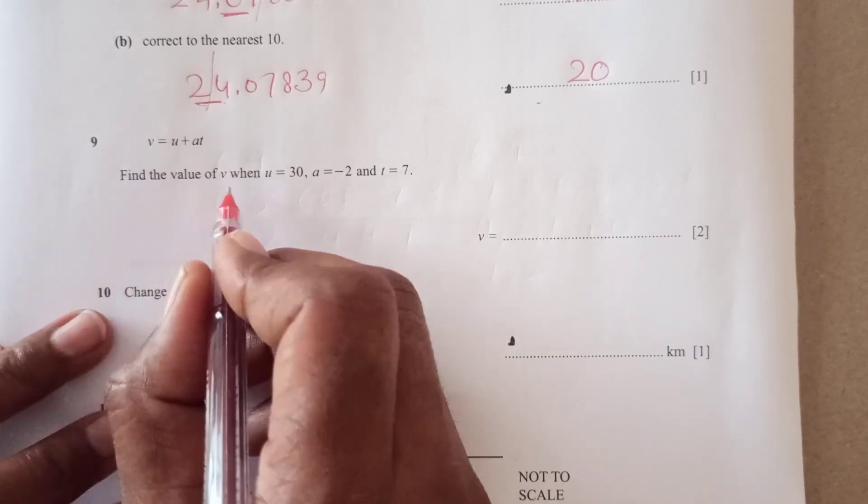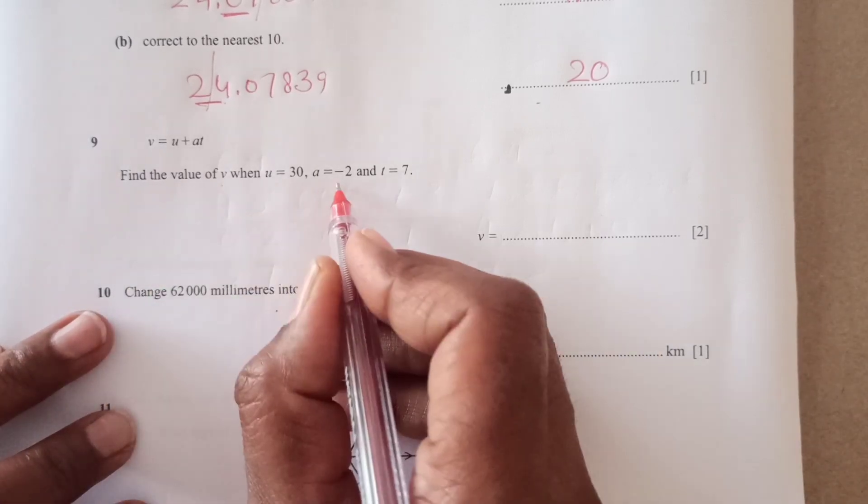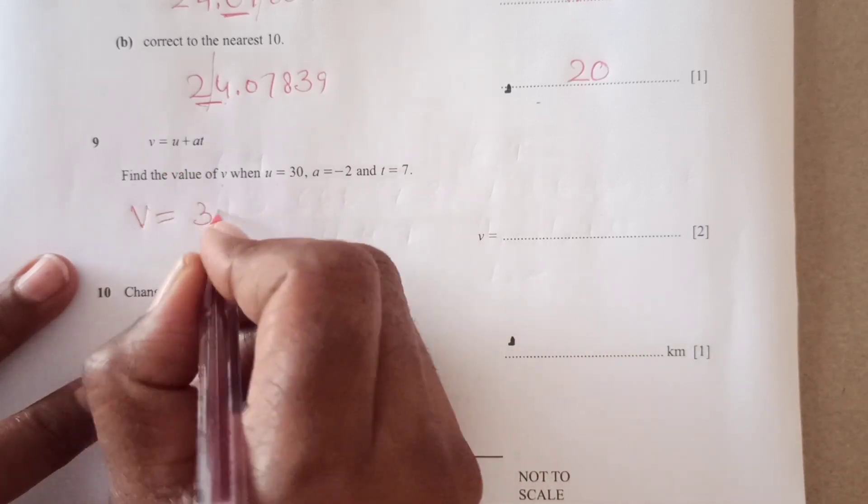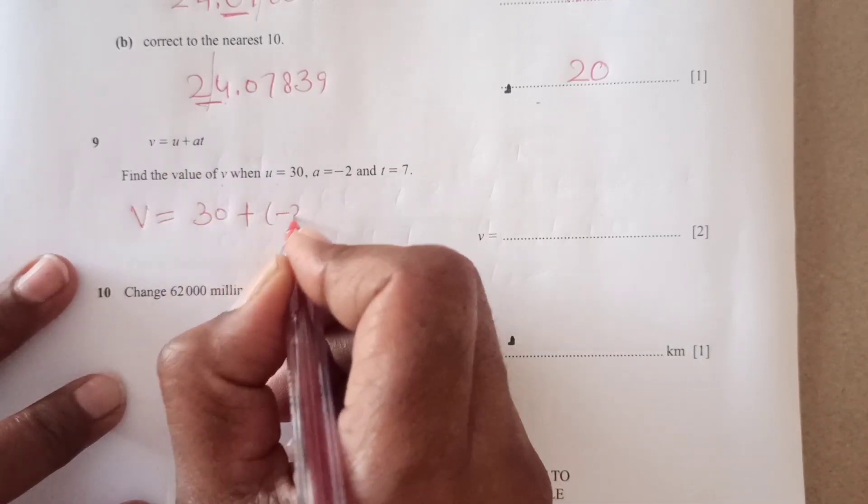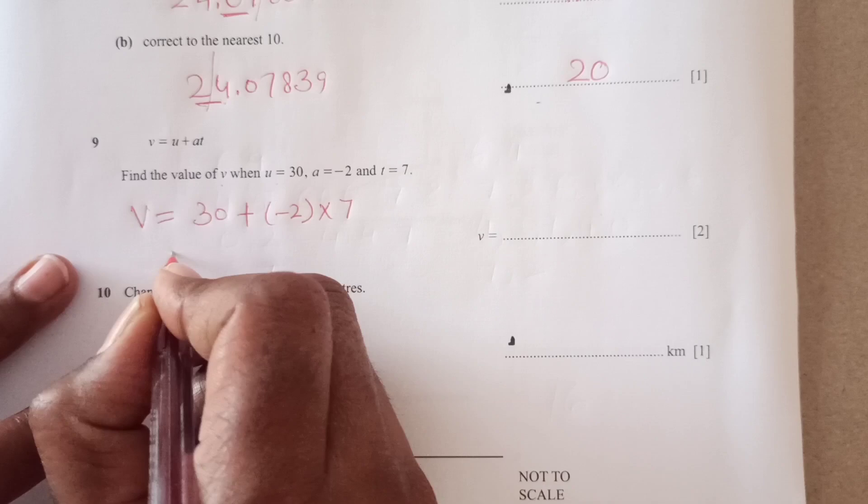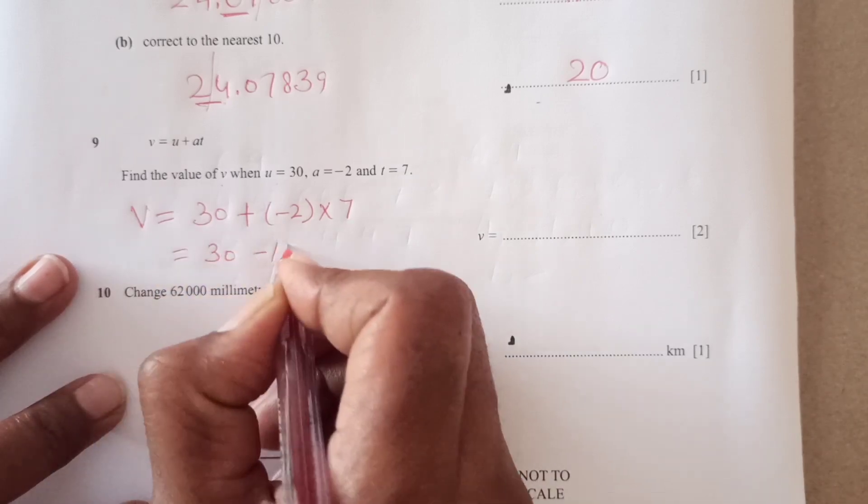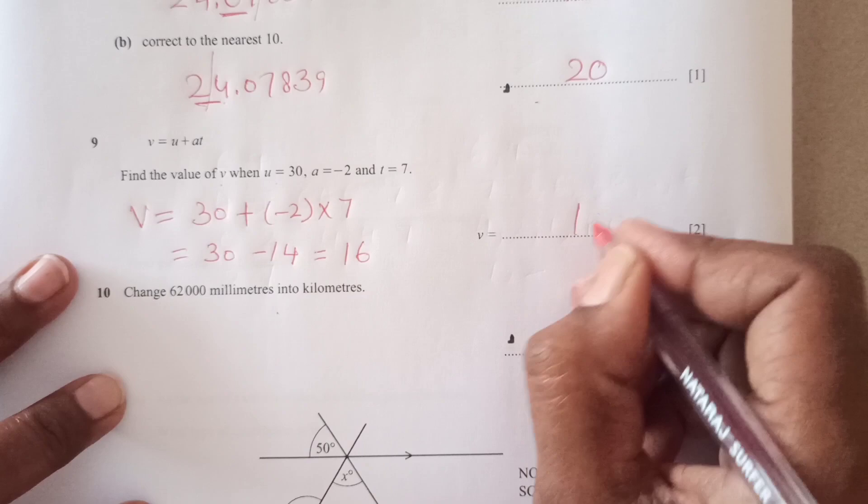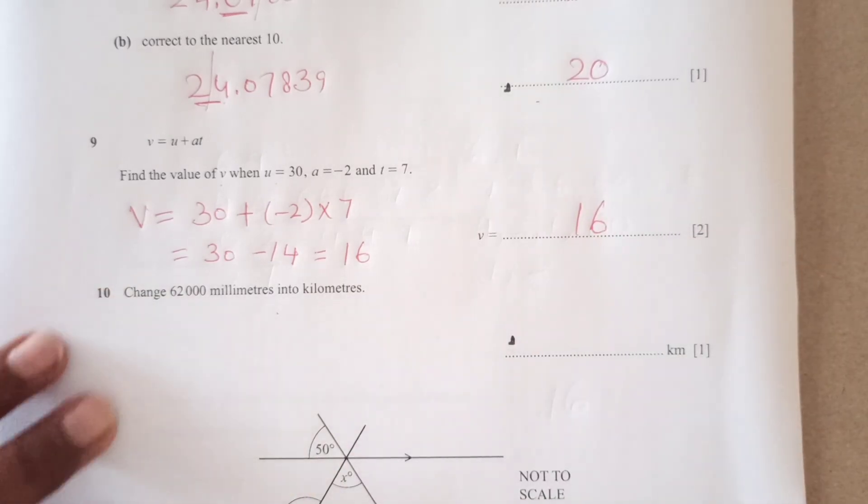And now find the value of V when U is 30, A is this. We are given the values. We are just going to plug in the value U. U is 30 plus A is negative 2 times T is 7. So 30 minus 14. 30 minus 14 is 16. So final answer is 16, right?